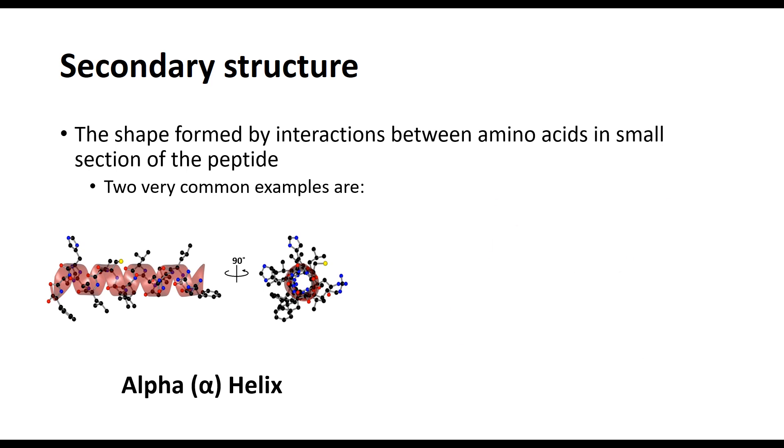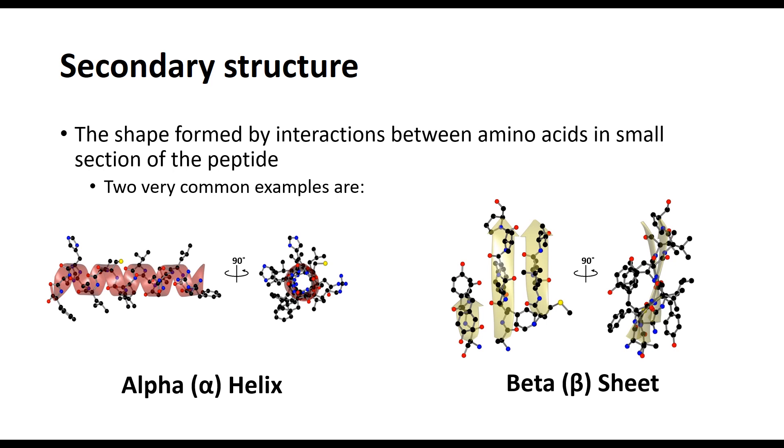The second commonly known structure is the beta sheet. Here it is the backbone of several sections of the peptide that is responsible for producing a relatively flat formation, like a sheet, with the side chains pointing above and below the flat plane of the structure.